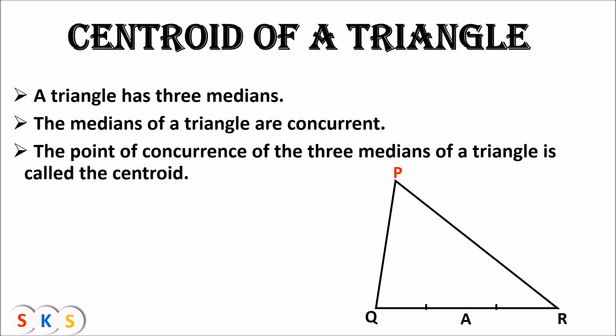In this figure, A is the midpoint of QR, so seg PA is one median of triangle PQR. Now we take vertex Q and join it with the midpoint of its opposite side PR — that midpoint is C, so seg QC is another median. Then we make a median from vertex R to its opposite side PQ — B is the midpoint of side PQ, so seg RB is another median. This triangle has three medians: seg PA, seg QC, and seg RB.